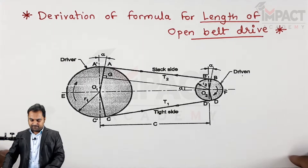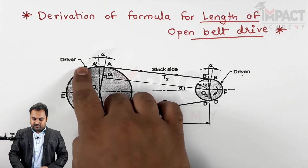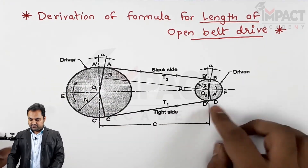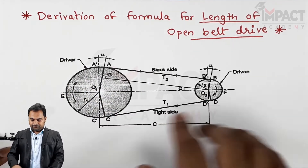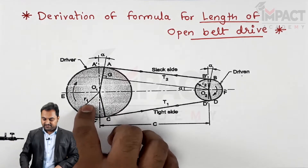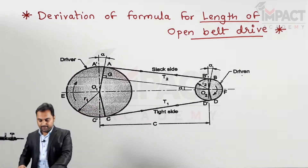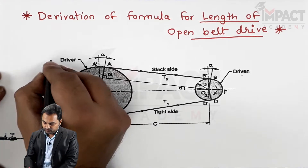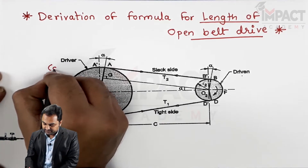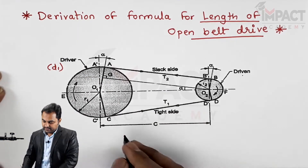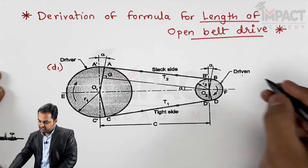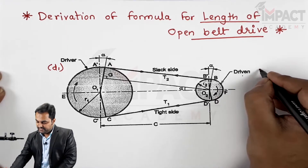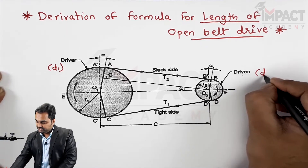Here is the diagram. The driver pulley is the bigger pulley and the driven pulley is the smaller pulley. The driver pulley has radius R1, so its diameter would be D1, and the smaller pulley has radius R2 and diameter D2.